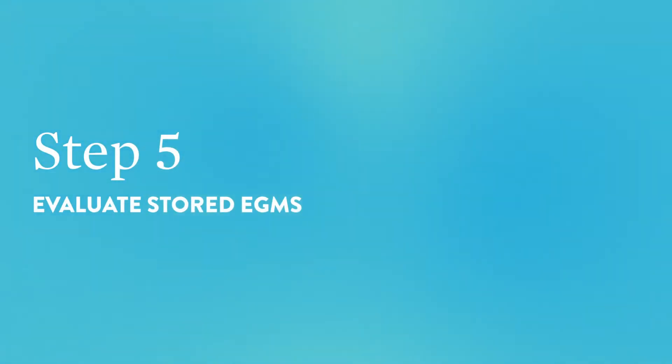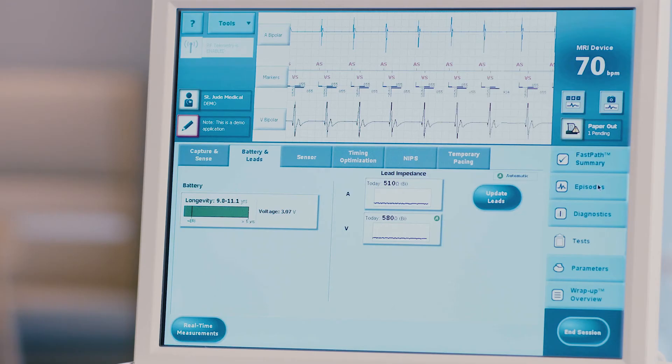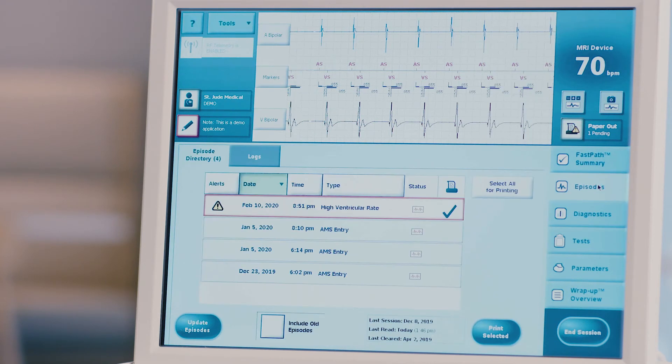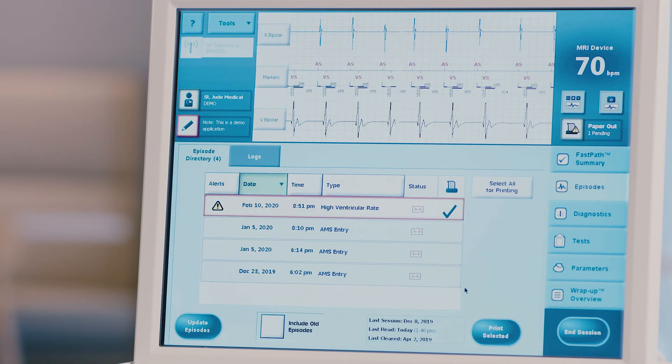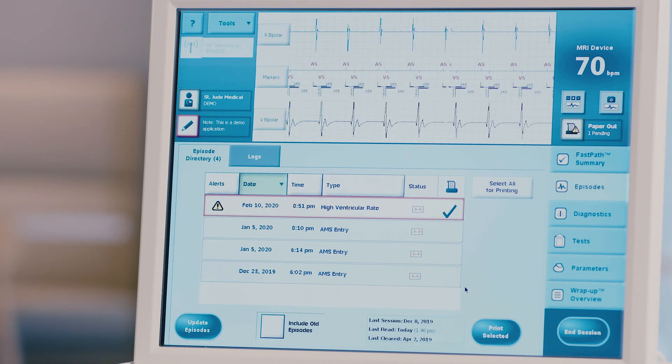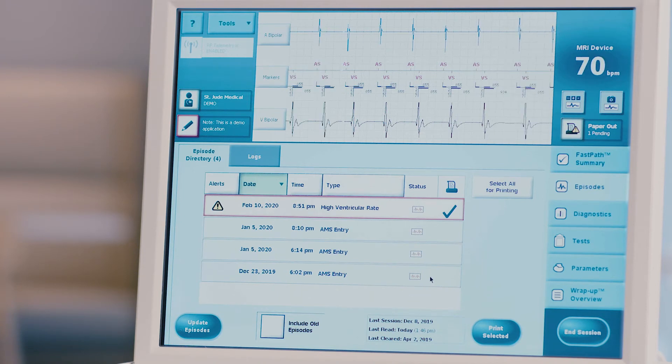Step 5: Evaluate stored EGMs. Press the episodes tab on the right hand side of the screen to open a list of recorded episodes. The episode directory screen will appear, listing all episodes recorded by the device since it was last cleared. Any episode that has an accompanying recorded EGM will be noted by this icon. Choose the episode to be evaluated by clicking on that episode in the list.